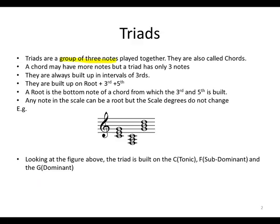Triads are a group of three notes played together. They are also called chords. A chord may have more notes, but a triad has only three notes. Remember, 'tri' means three. They are always built up in intervals of thirds, and they are built up on root, third, and fifth — the root being the bottom note of a chord upon which the third and the fifth are built.